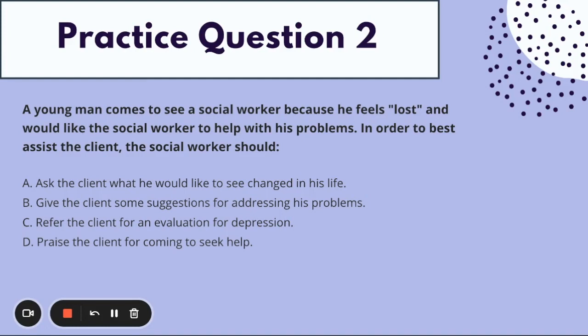Practice question number two: A young man comes to see a social worker because he feels lost and would like the social worker to help him with his problems. In order to best assist the client, the social worker should: A) ask the client what he would like to see changed in his life, B) give the client some suggestions for addressing his problems, C) refer the client for an evaluation for depression, D) praise the client for coming to seek help.